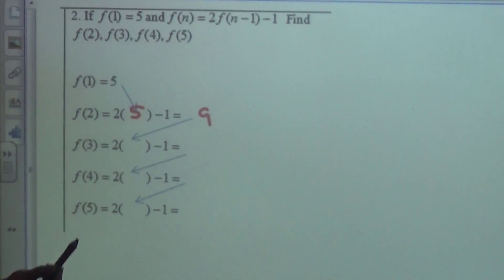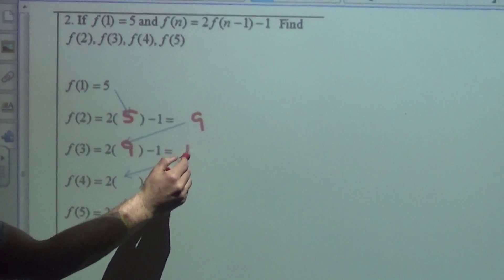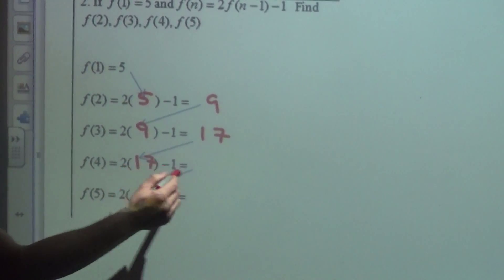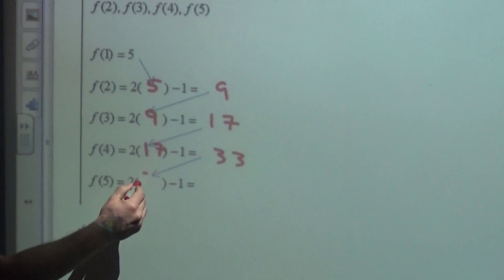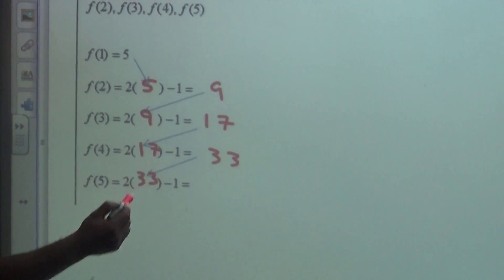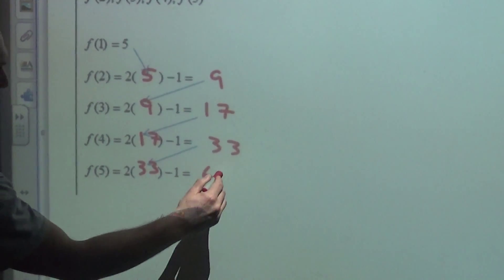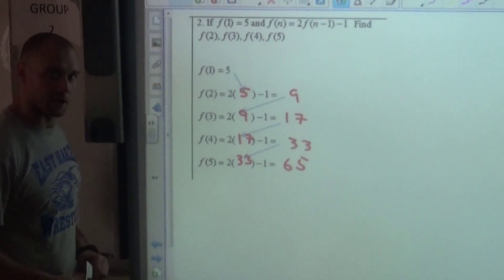So we take our answer from the previous term, plug in — 10 minus 1 gives us 9. We take our answer, plug in to the next term, and get 17. Now we take our answer, plug back in. Again, we do the same thing each time: 2 times the previous term minus 1, and we end up with 65. Good job.